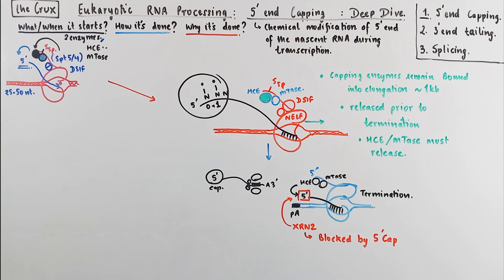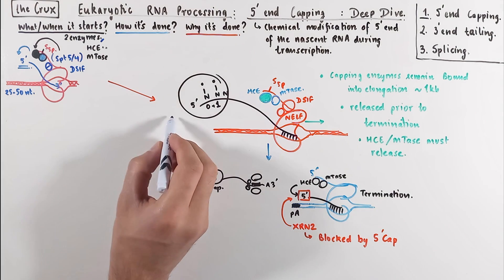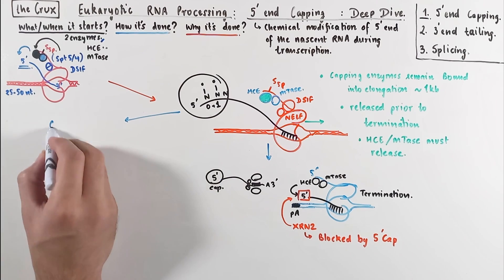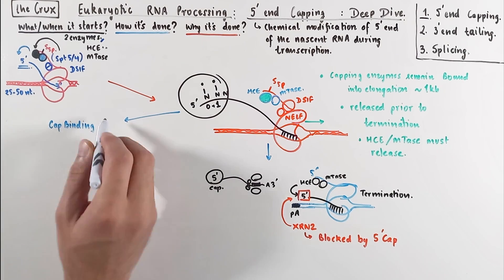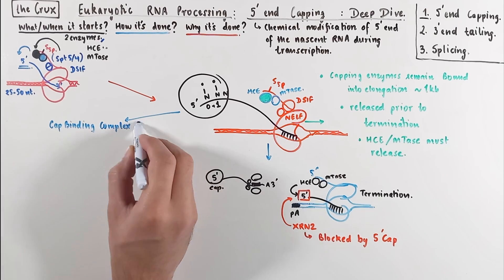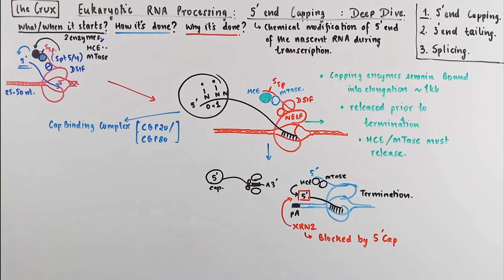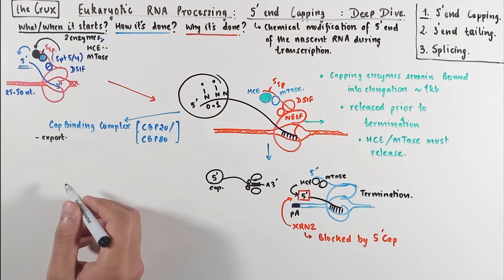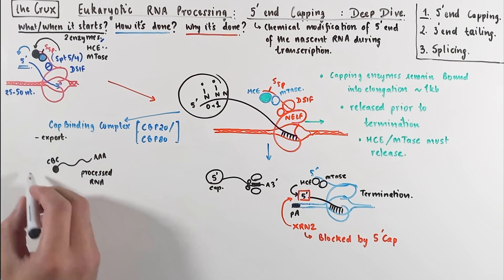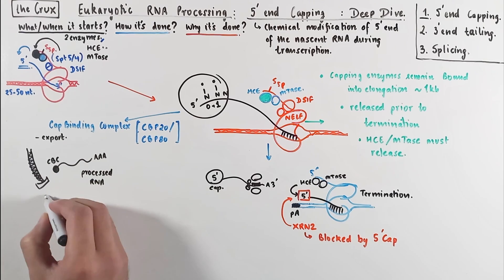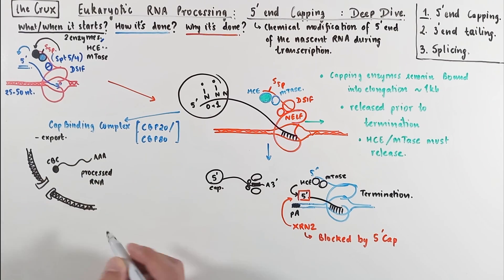Now going back to the original capping stage, when this cap is formed, it is immediately stabilized by proteins known as cap binding complexes, which are usually cap binding protein 20 or 80. These cap binding proteins are very important because they help in the export of the RNA from the nuclei into the cytoplasm. They interact with the nuclear pore complex and take the processed RNA from the nucleus out into the cytoplasm.